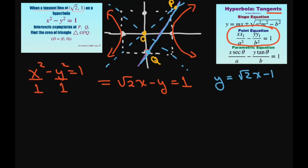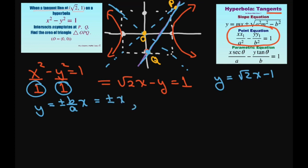Now the equation of the asymptotes — these blue lines — are y = ±(b/a)x. Since b = 1 and a = 1, this simplifies to y = ±x. So we're going to use y = x and y = -x. P and Q are the intersections of the tangent line with these asymptotes.